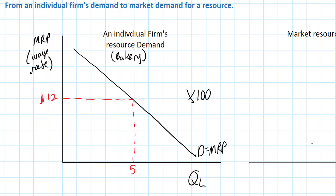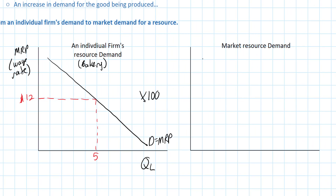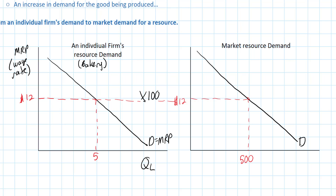The total demand for bakers or workers at bakeries in the market is made up of the demand from each individual bakery times the number of bakeries. So we're basically going to have a situation in which the total demand for labor at a wage rate of $12 is the horizontal sum of every individual employer's demand for labor. In other words, 500 workers will be demanded in the labor market as a whole. And what we end up with is a downward sloping market demand curve. This is our marginal revenue product in the entire market for bakery employees. An individual firm will employ five workers at a wage rate of $12 an hour, but the 100 firms in this market — we multiply basically the individual's demand by the number of firms in the market and we get the total market demand for the resource.